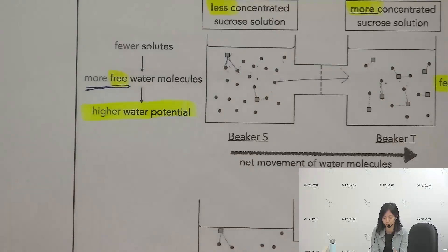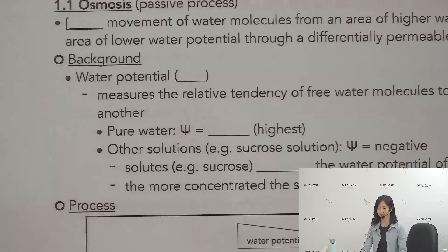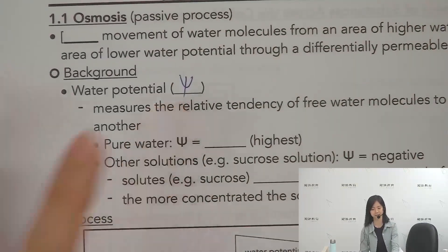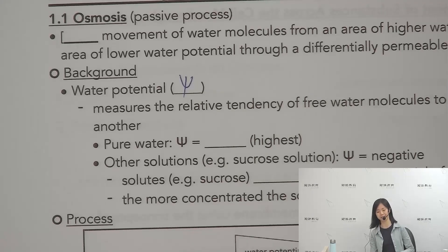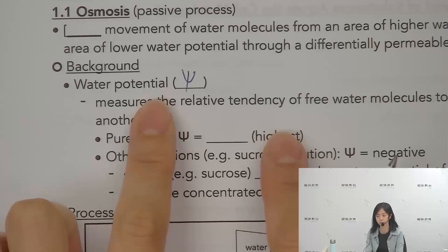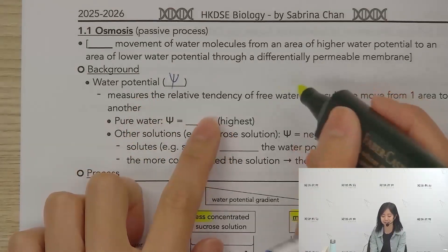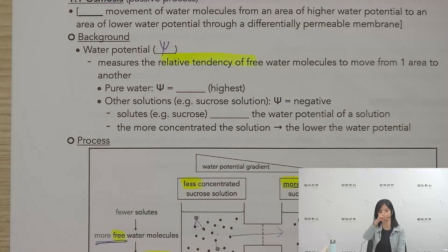Now we have to learn water potential — what is the meaning of this concept? Water potential has a symbol that we call Psi (Ψ), which is the symbol for water potential. Water potential tells you how much the free water molecules want to move to another place.